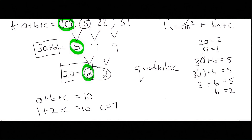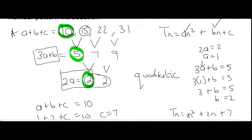We can now write the final formula: Tn = n² + 2n + 7. I always suggest students test the formula at this point. The last given value is at position 4, so plug n = 4 into the equation, being careful to use brackets wherever you see n. You get an answer of 31, which matches, confirming the formula is correct.